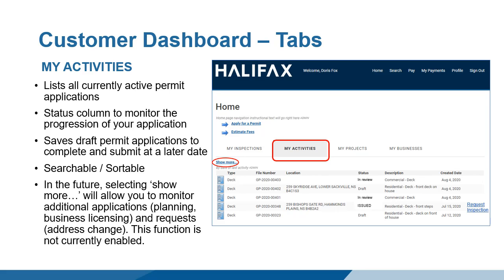When the permit status becomes issued, the ability to request inspections is enabled and you will see the link to initiate the request in the far right column of the permit. Once a request inspection is initiated, the permit is tracked in the My Inspections tab.